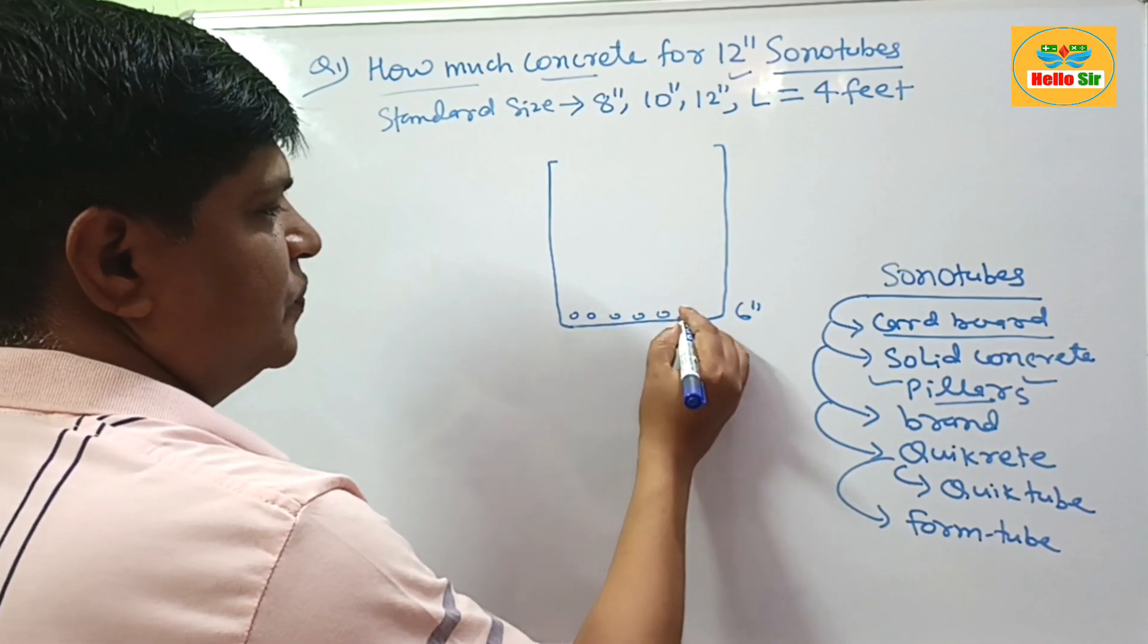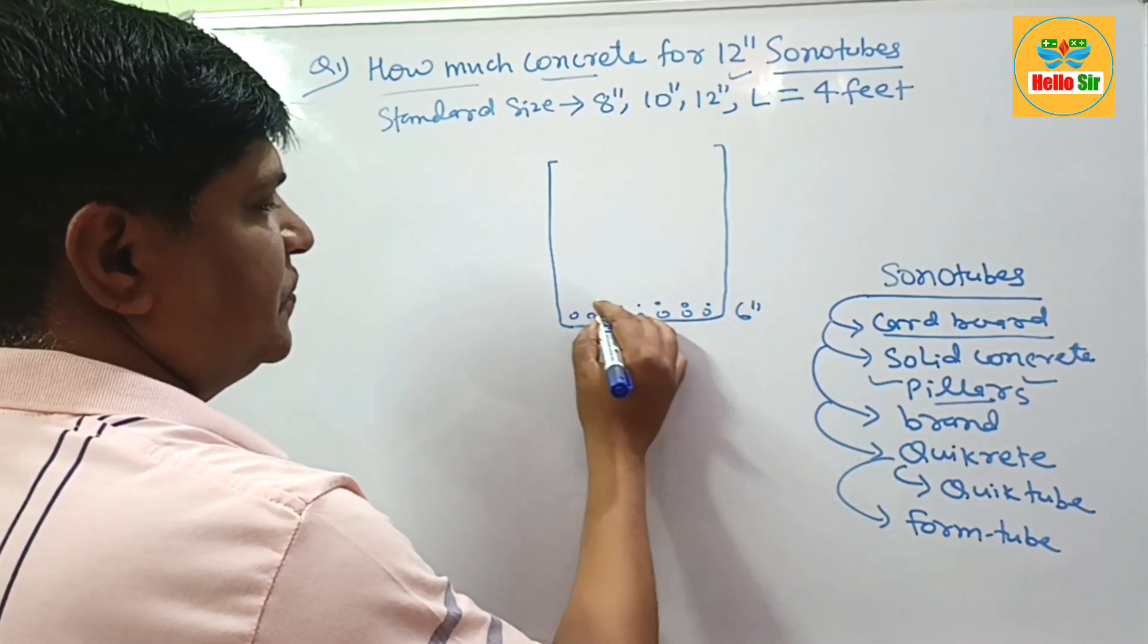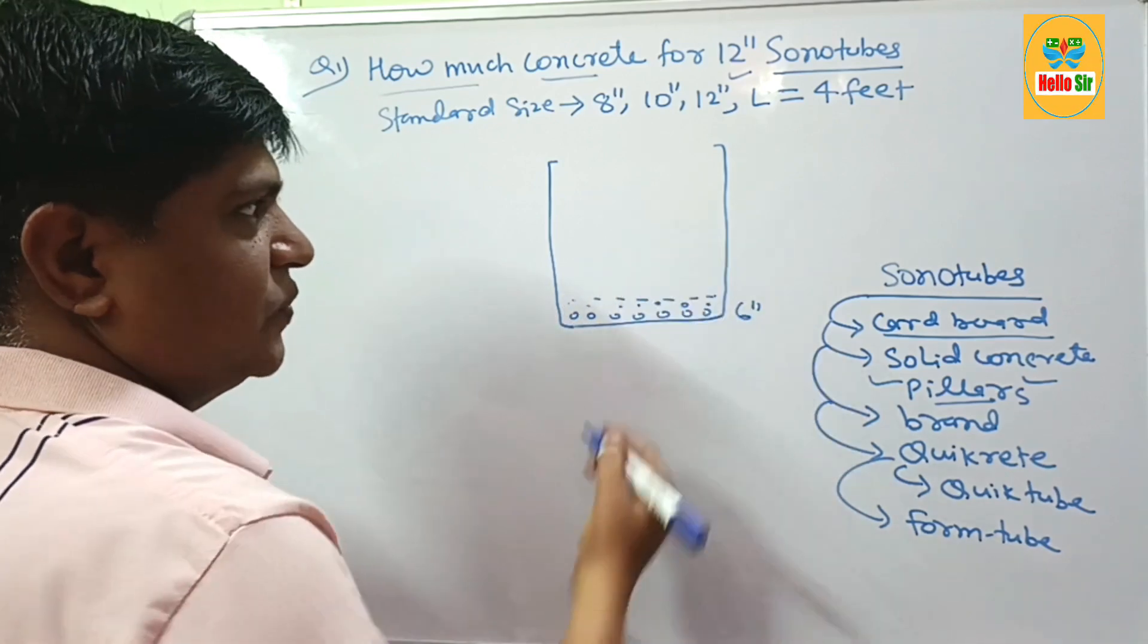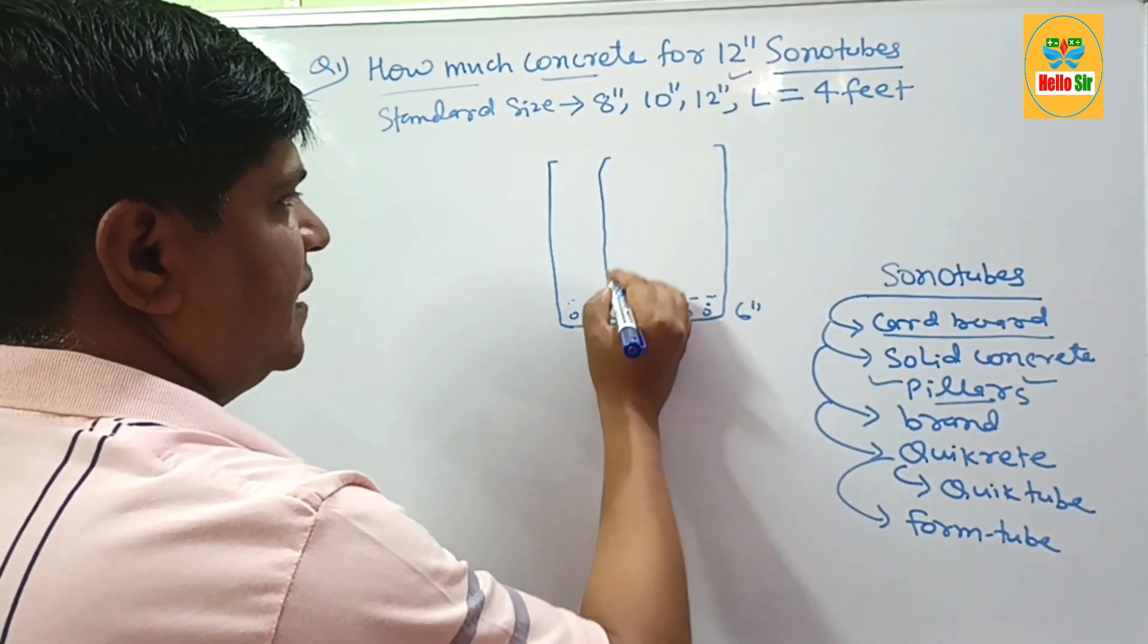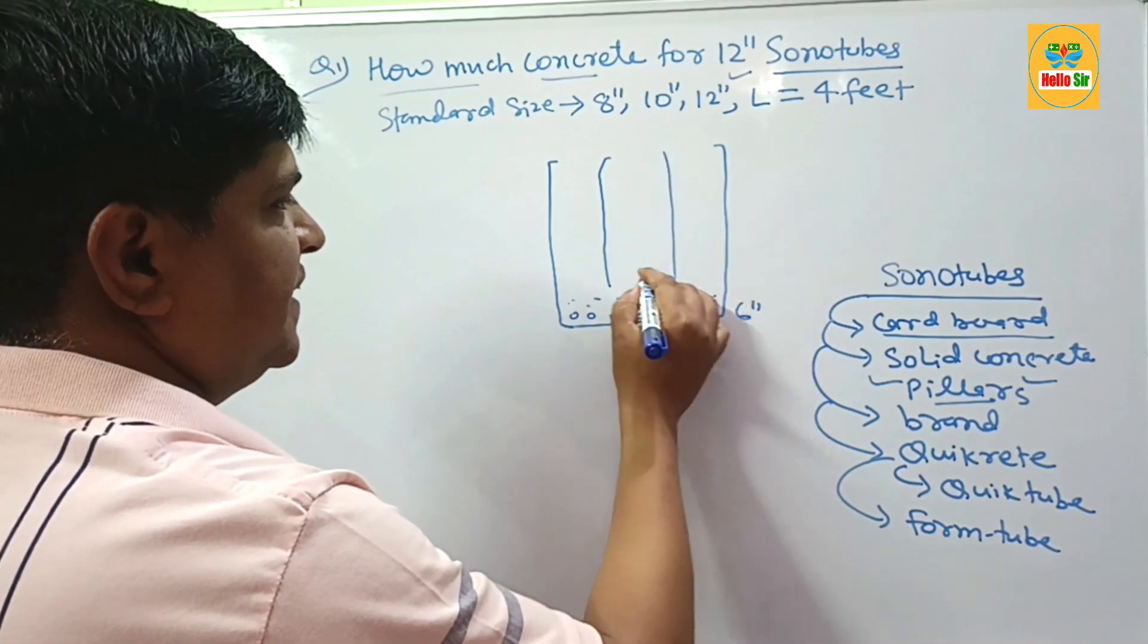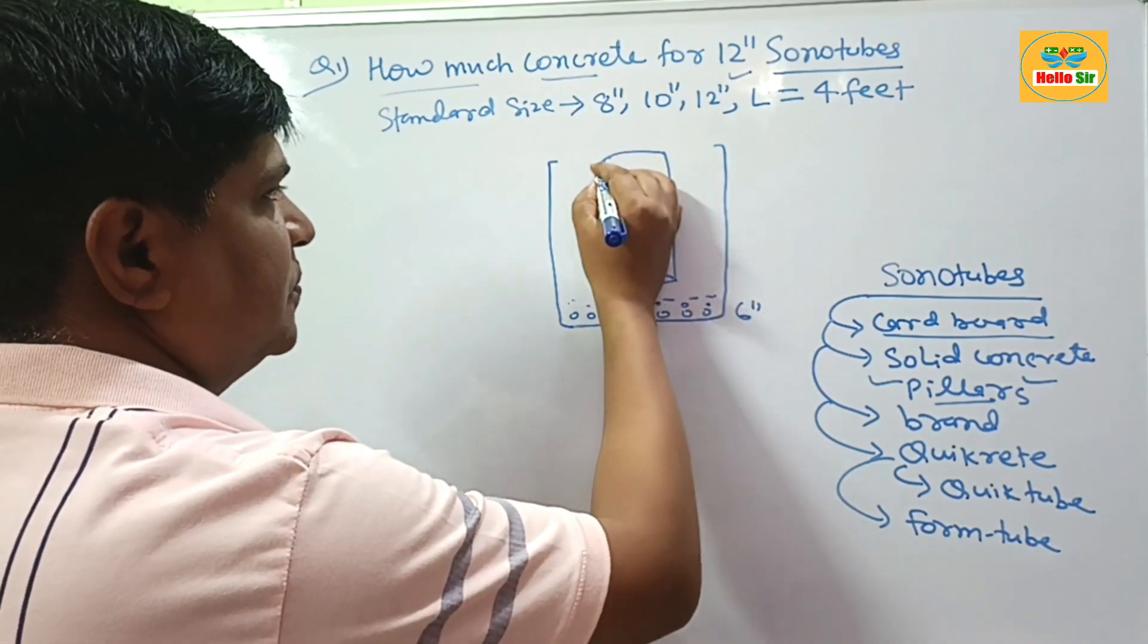you can put the crushed stone. This is crushed stone. And the sonotubes insert in these holes. It is in cylindrical shape, so this is your sonotubes.